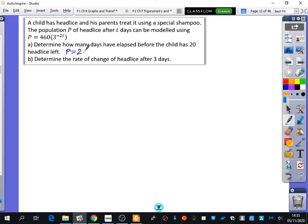It says, first of all, determine how many days have elapsed before the child has 20 head lice left. So, 20 head lice left means that the child has got a population of 20 lice living on its head. So, I'm going to replace p with 20. So, 20 equals 460, 3 to the power of minus 2t. I'm then going to divide both sides by 460. So, we've got 1 over 23 equals 3 to the power of minus 2t. Now, if you've done your work on exponentials here, you should be able to work out what minus 2t is. This is changing this from an exponential statement into a logarithmic statement.